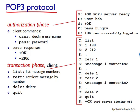With the TCP connection established, POP3 progresses through three phases: authorization, transaction, and update. During the first phase, authorization, the user agent sends a username and password in the clear to authenticate the user. During the second phase, transaction, the user agent retrieves messages and can also mark messages for deletion, remove deletion marks, and obtain mail statistics. The third phase, update, occurs after the client issues the quit command ending the POP3 session, at which point the mail server deletes the messages that were marked for deletion.